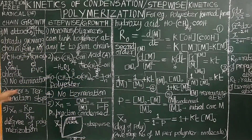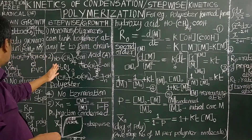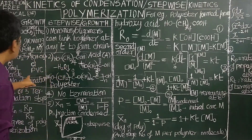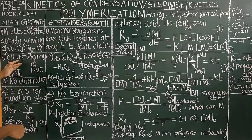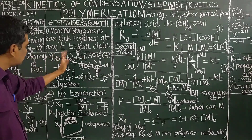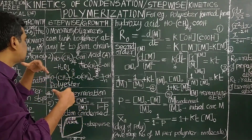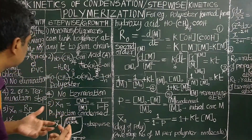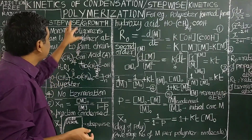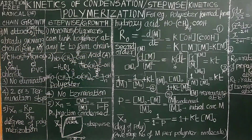In free-radical addition polymerization there is no elimination, whereas in condensation polymerization simple molecules are eliminated. There are byproducts formed during the condensation polymerization reaction.